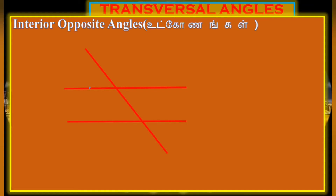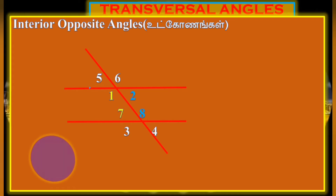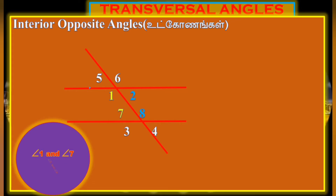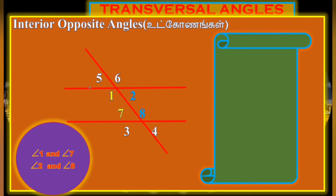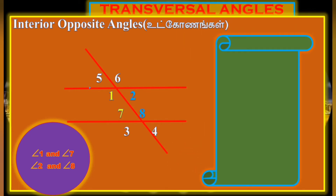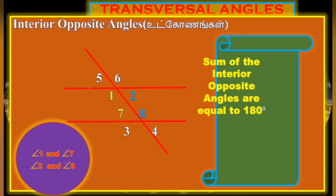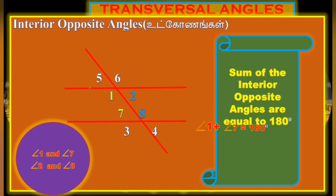The sum of the interior angles is equal to 180 degrees. Look at the transversal: if we cut the A, B parallel lines with transversal L, the interior angles are 2 and 8, and 1 and 7. The sum is 180 degrees. For example, angle 1 plus angle 7 is 180, and angle 2 plus angle 8 is 180. Also angle 7 plus angle 8 is 180, and angle 1 plus angle 8 is 180.